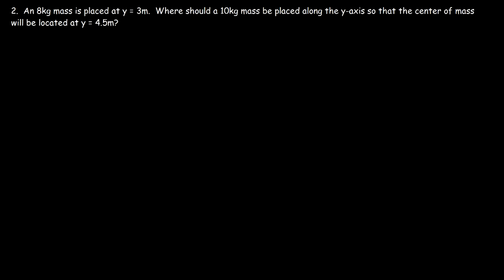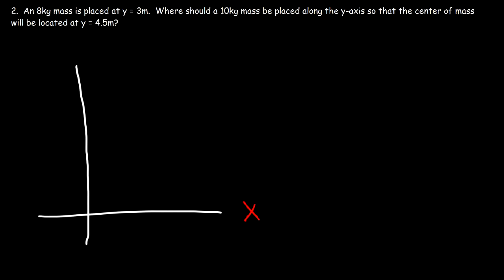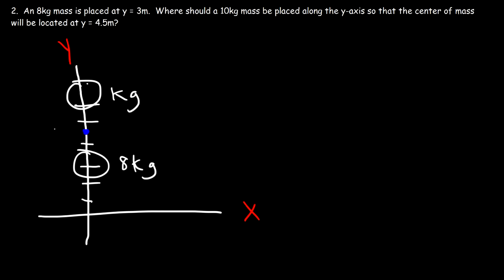An 8 kilogram mass is placed at y equals 3. Where should a 10 kilogram mass be placed along the y-axis so that the center of mass is located at y equals 4.5? Let's draw a picture. At position 3 we have the 8 kilogram mass, and 4.5 is where we want the center of mass to be. Therefore we have to place the 10 kilogram mass above the center of mass so that it will be located at 4.5.